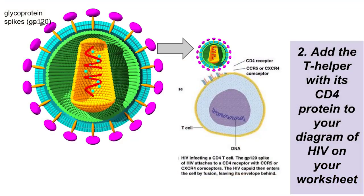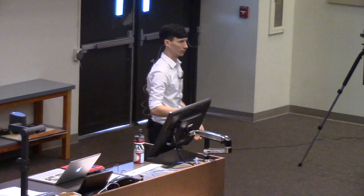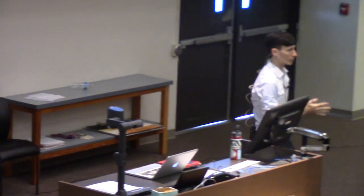We can now add a T helper cell with its surface protein to our diagram of HIV on your worksheet. This is a terrible scale — the scale is more like it was in the video. Think basketball-sized cell, little tiny marble virion, even smaller than that really. So try to get better scale than this, and go ahead and add a T helper cell and the important parts to your diagram.